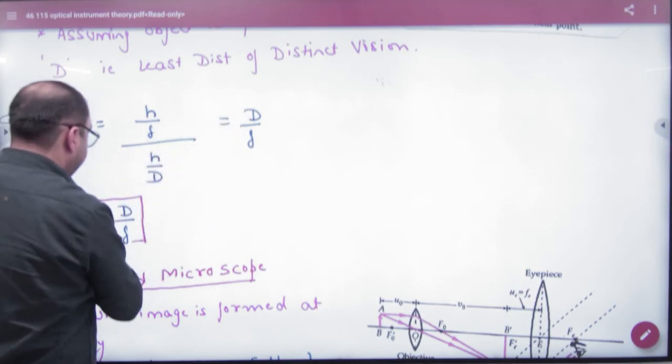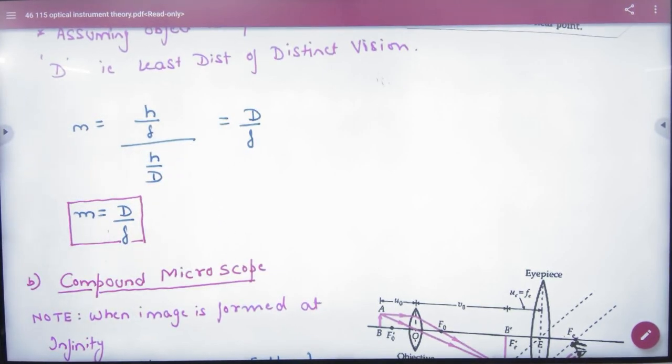So this formula will come - the H values cancel, giving D by F.